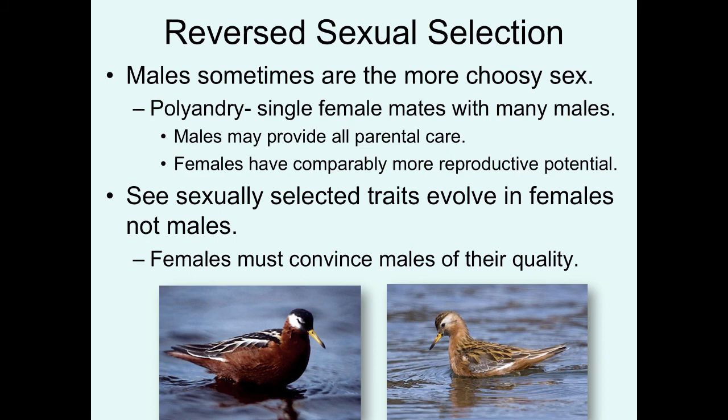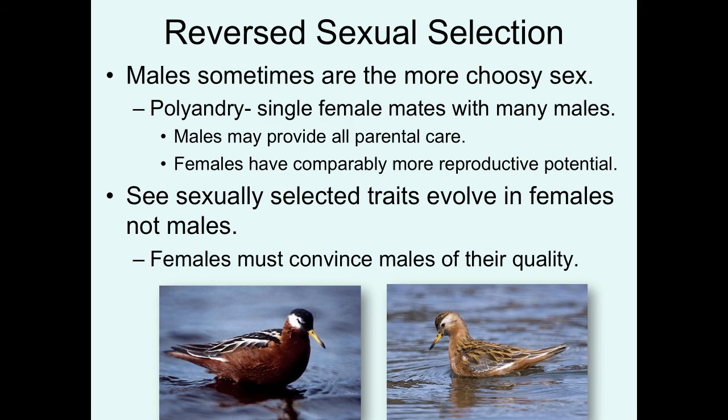Therefore, in these situations, we tend to see the sexually selected traits evolve in the females, not the males. The females have to convince males of their quality, and the males are more choosy. Here we have two birds of the same species — phalaropes. If you didn't know the context of this lecture, you would probably guess that the bird on the left is the male — the brighter, larger bird — and the one on the right is the female. But it turns out that's the reverse. The female is larger and brighter, evolving these characteristics to convince males to mate with them.